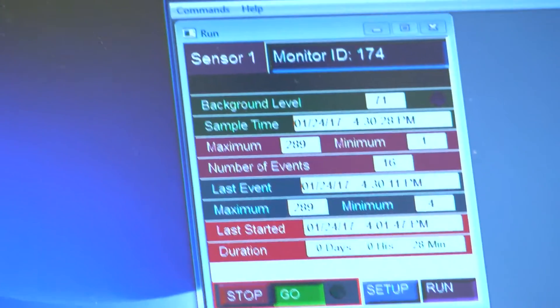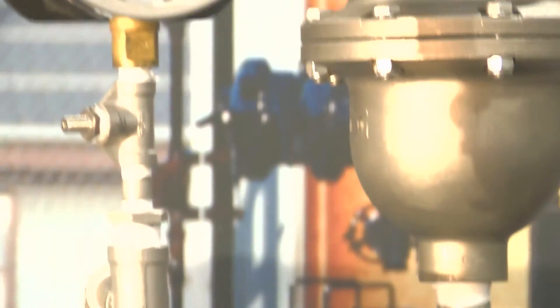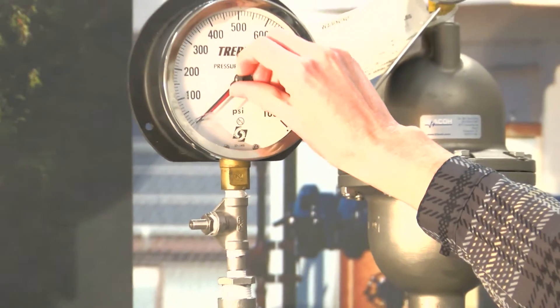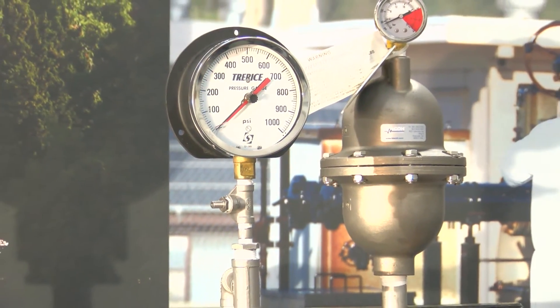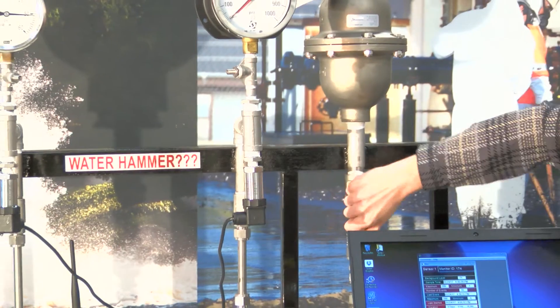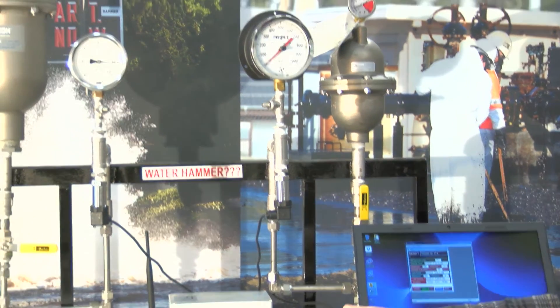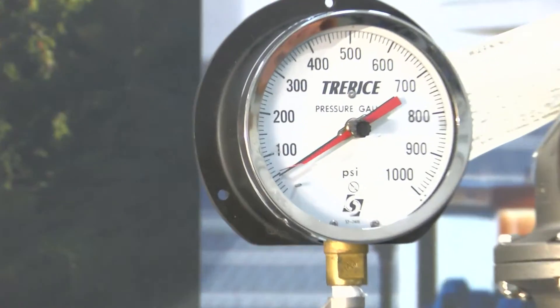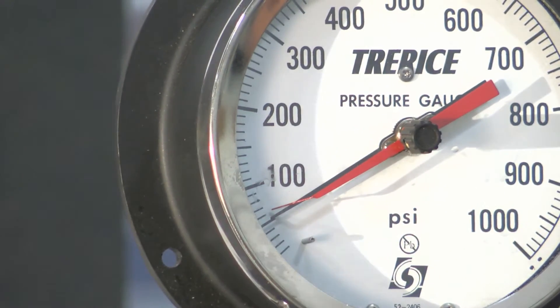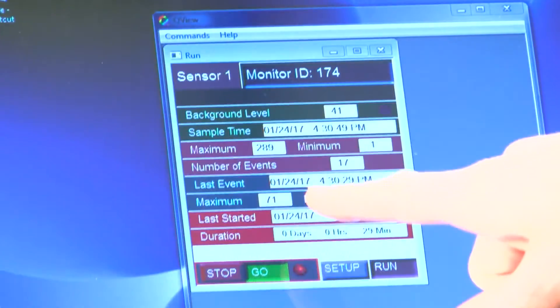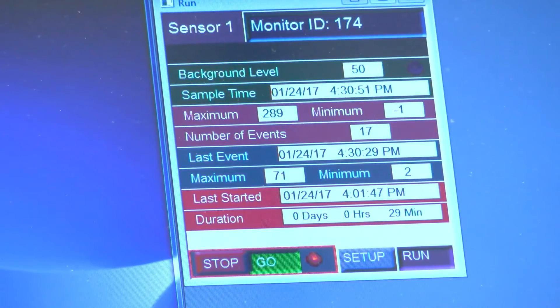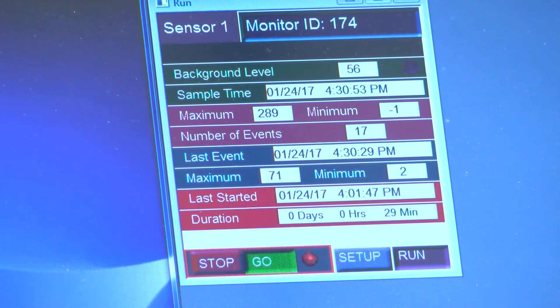Now if I repeat that simulation with the BLECO surge vessel active, you'll see I do have a positive wave going out but nowhere near that high pressure. It actually goes up to about 71 psi or roughly the deadhead pressure of the pump.